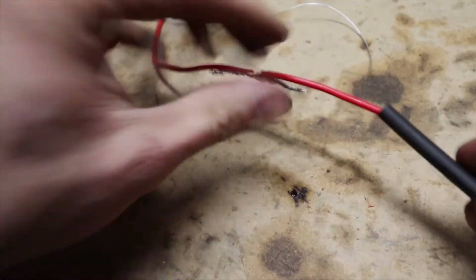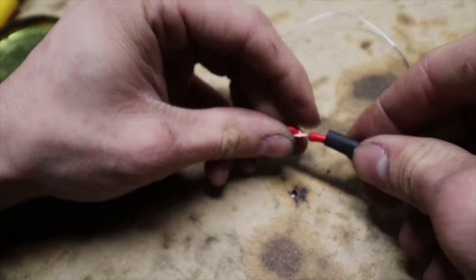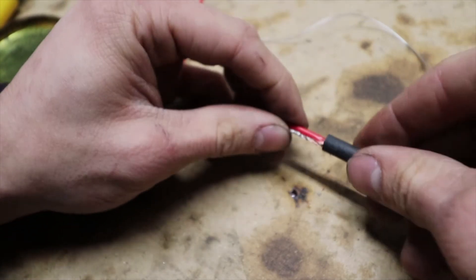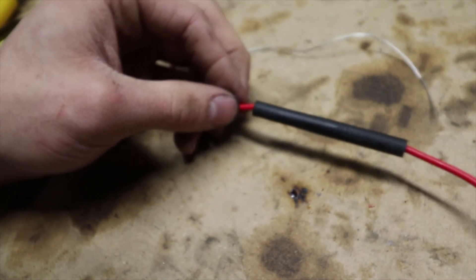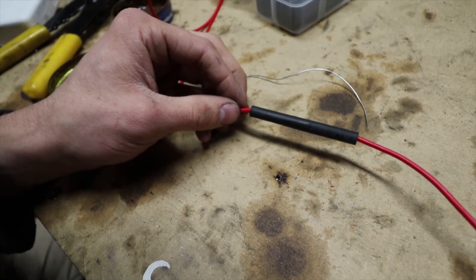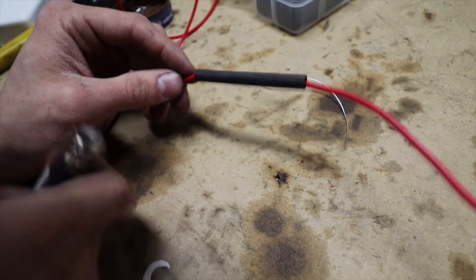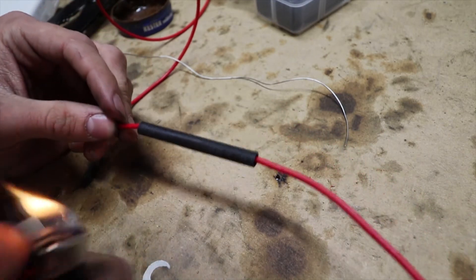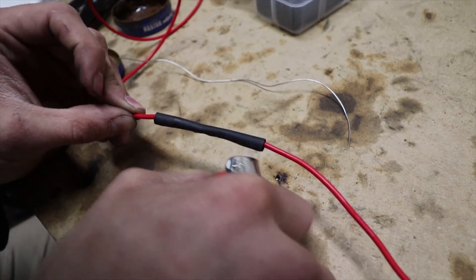Take your heat shrink tubing down, slide it all over the entire assembly. And then you can take a lighter or a torch or even the soldering iron really and shrink the heat shrink tubing.